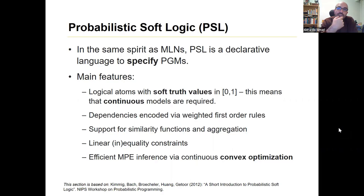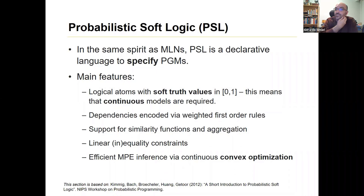It's another kind of declarative language to specify a probabilistic graphical model. The main feature is that 'soft' is usually taken to mean some sort of fuzzy value — so it's not a probability, it's just some value between 0 and 1, where 0 means no membership to whatever property you want, and 1 is total membership.